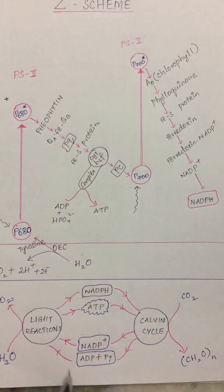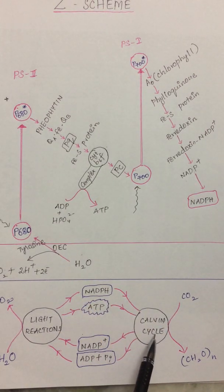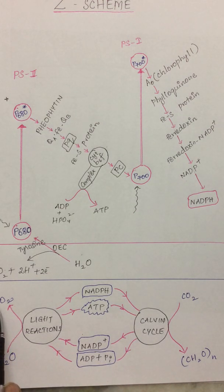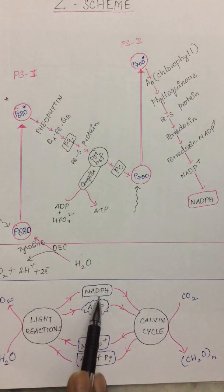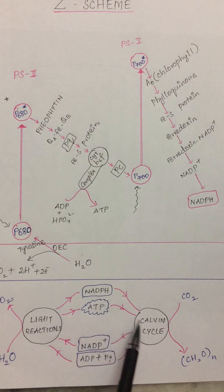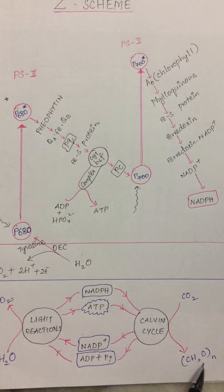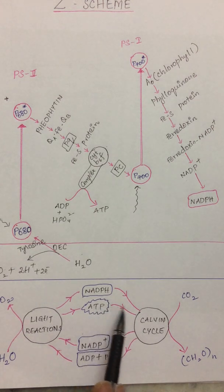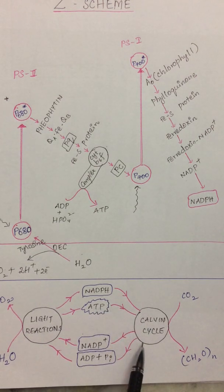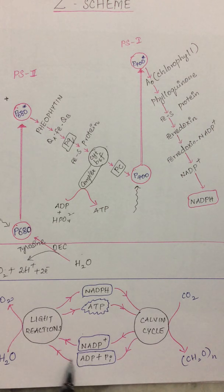Let us look at the combination of light reactions and the Calvin cycle. In light reactions, water is converted to oxygen, and ATP and NADPH are produced. These two enter the Calvin cycle, where carbon dioxide is fixed into carbohydrates. NADPH is converted to NADP+, and ATP is utilized and converted to ADP. That ADP along with phosphate returns to the light reaction and is converted back into ATP. This is a cycle.